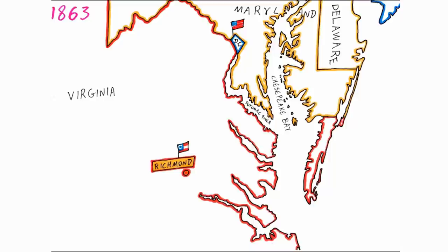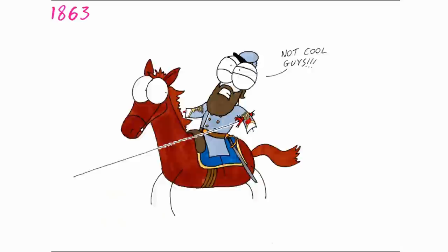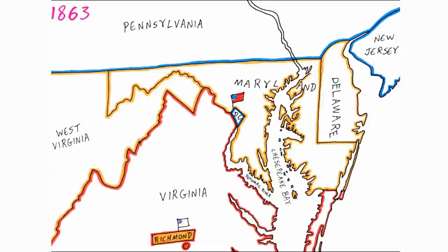The Union went through a few different generals in the East, unable to defeat General Lee's forces. Despite being outnumbered two to one, Lee was victorious at Chancellorsville, although he did lose Stonewall Jackson to friendly fire. West Virginia separated from Virginia and became neutral.